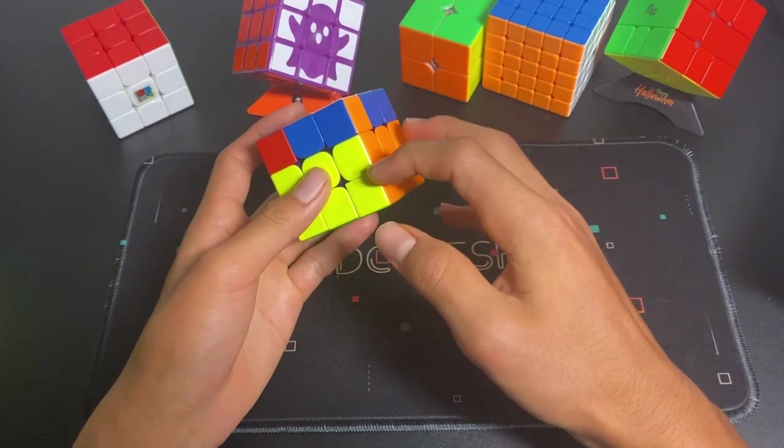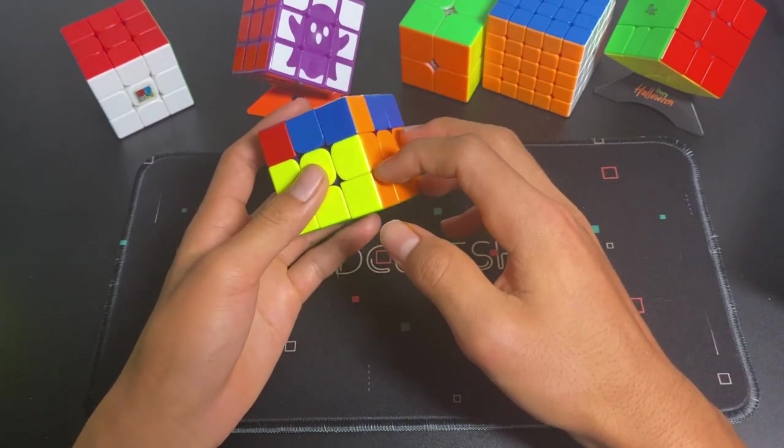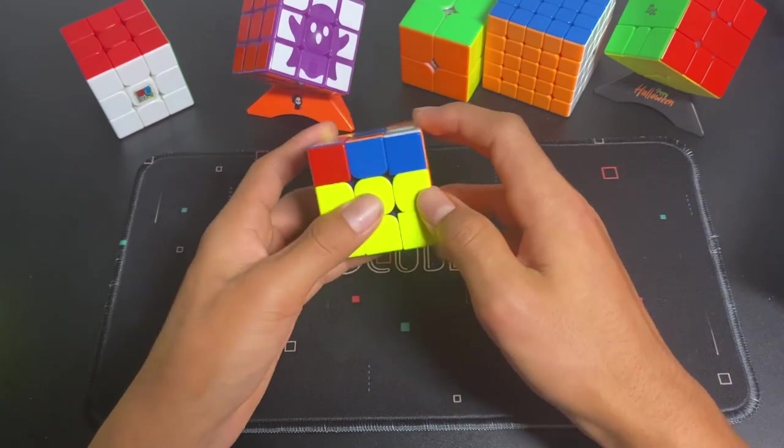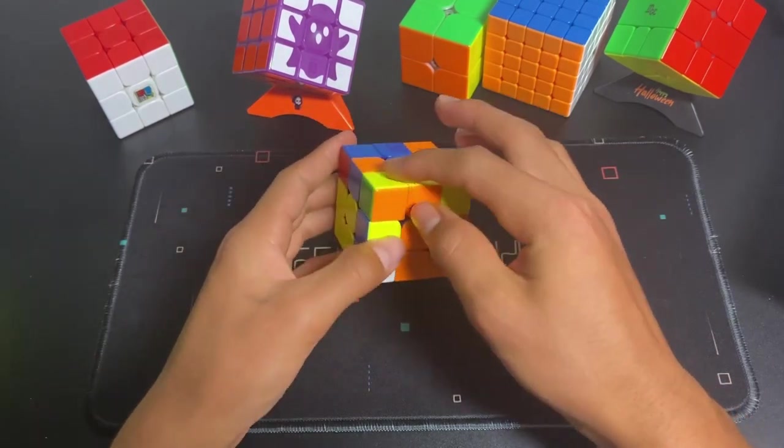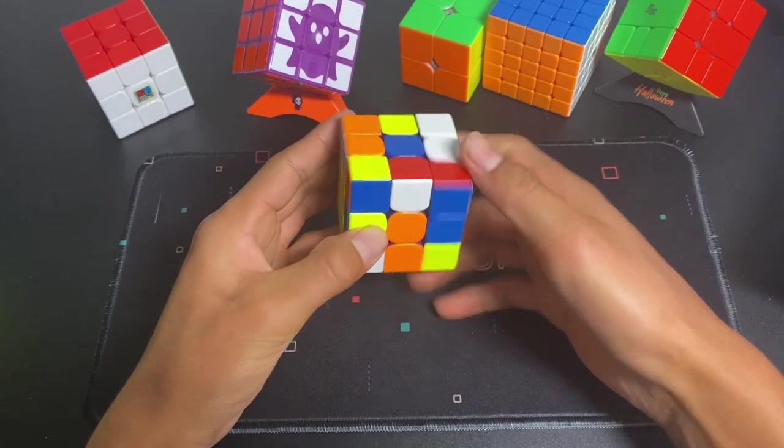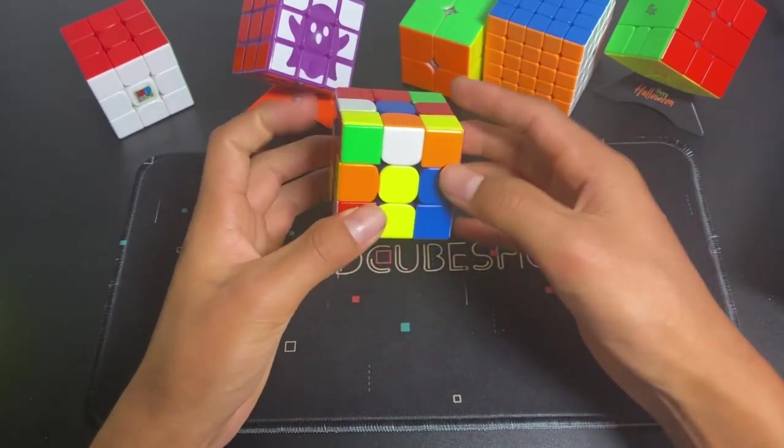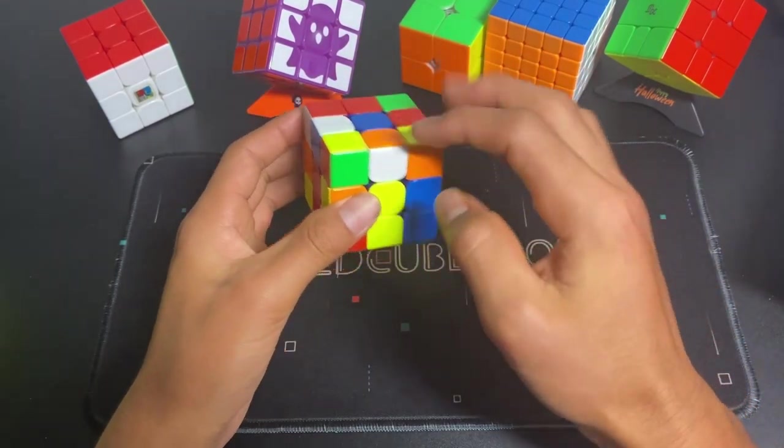And you should also find the most efficient way to improve your look ahead. And that is to solve both back slots first before solving the front slots. Because if you solve the front slots first,